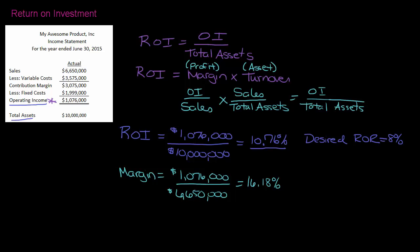So that means that for every dollar in sales, 16.18 cents, or 16.18% is profit. Now with turnover, and remember this is asset turnover.